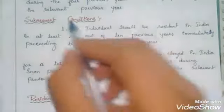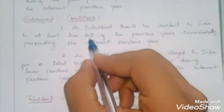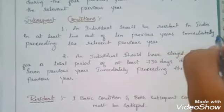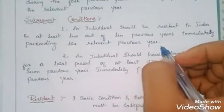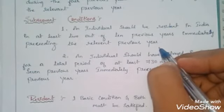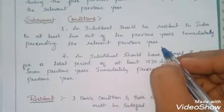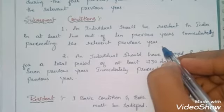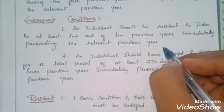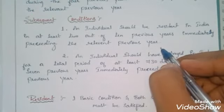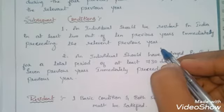Now let us talk about subsequent conditions. The first subsequent condition is that an individual should be resident in India in at least two out of ten previous years immediately preceding the relevant previous year. It means an individual must stay in the country for a minimum of two years out of the previous 10 years — not necessarily the first two or last two, but any two within those 10 years. For example, if the previous year is 2018-19, then from 2008-09 to 2018-19, he can stay for any two years.